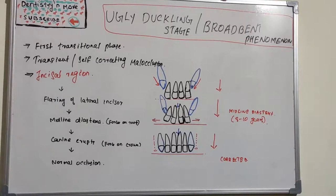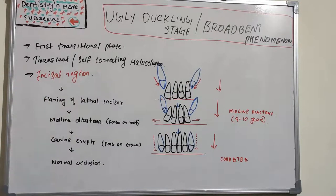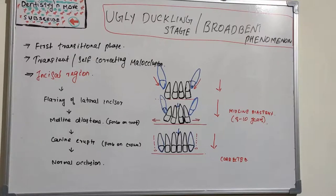Hello everyone, welcome back to a new session on Dentistry and More. Today we have a very interesting topic: the Ugly Duckling Stage, or Broadbent Phenomenon. All of us have faced or went through this stage during our early school years, where our teeth looked very weird, especially the front teeth. They were flared up, but after a few years it corrected automatically.